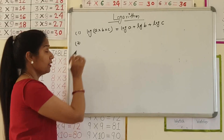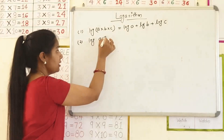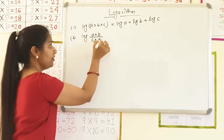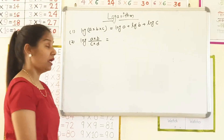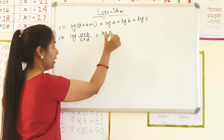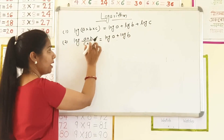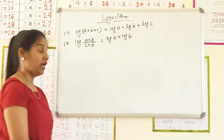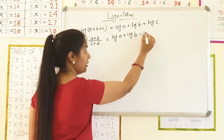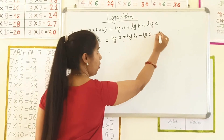The second property is: if the numbers are in multiplication as well as in division form, then we can write log A plus log B. The numbers which are in division will be subtracted with log.